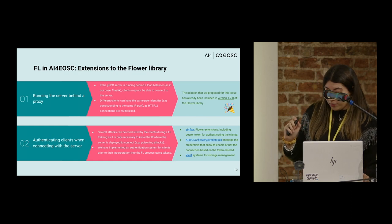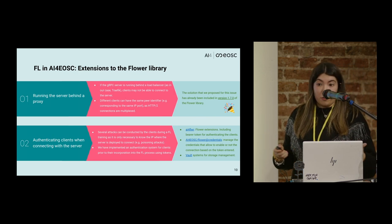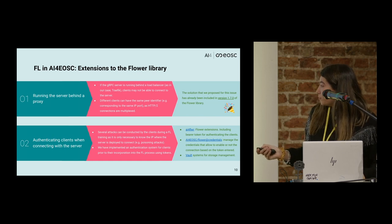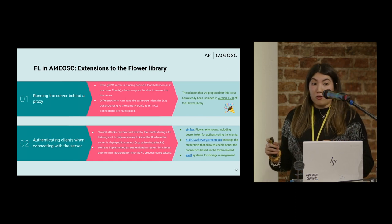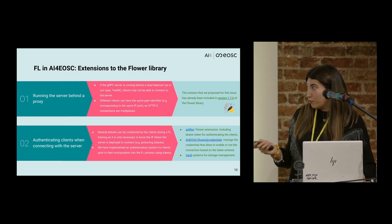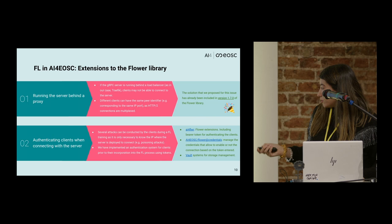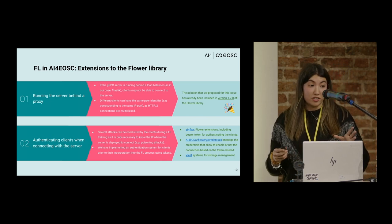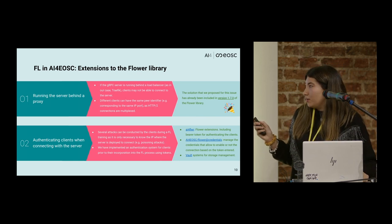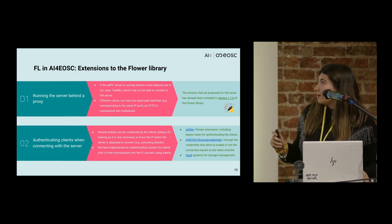In order to implement this, we first implemented what we call AI4Flower — some Flower extensions in which we include bearer tokens for allowing authentication. We also performed a modification in our own AI4EOSC Flower repo to manage the credentials needed for authentication. We also created a system for storage management using Vault from HashiCorp, which we integrated into our deployments.